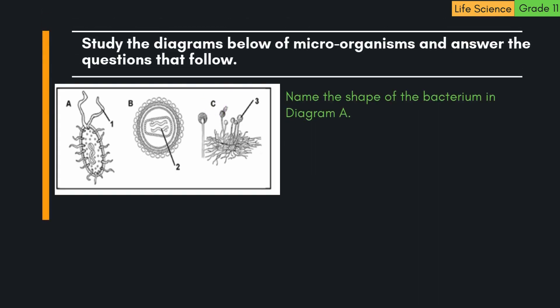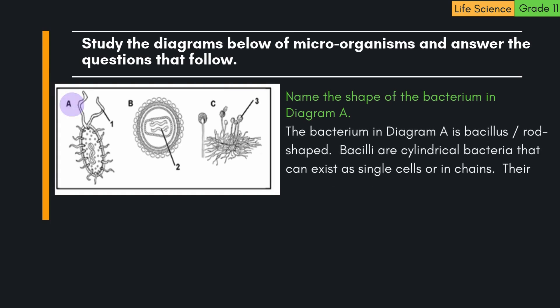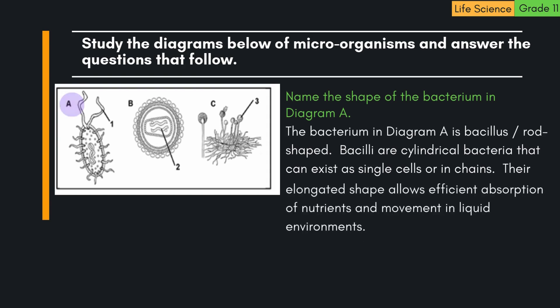Question: Name the shape of the bacterium in diagram A. The bacterium in diagram A is bacillus, or rod-shaped. Bacilli are cylindrical bacteria that can exist as single cells or in chains. Their elongated shape allows efficient absorption of nutrients and movement in liquid environments.